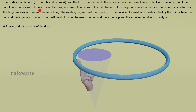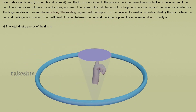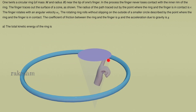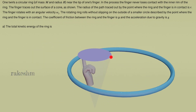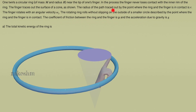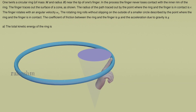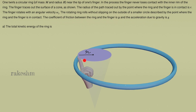The finger traces out the surface of a cone as shown. So this finger traces out the surface of a cone — I have drawn the cone here. The radius of the path traced out by the point where the ring and the finger are in contact is small r. So the finger is moving like this, and this radius is small r. This finger is rotating with angular velocity omega naught.